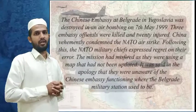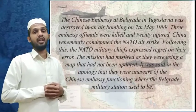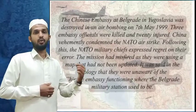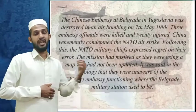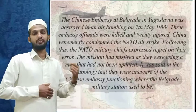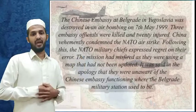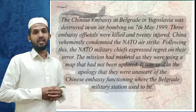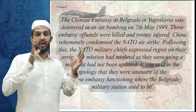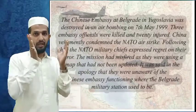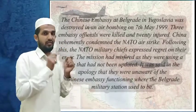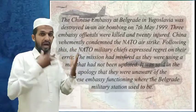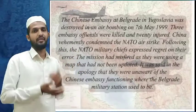First, we can see a story related to the map. The Chinese embassy at Belgrade in Yugoslavia was destroyed in an air bombing on 7th May 1999. Three embassy officers were killed and 20 injured. China condemned the NATO air strike, and the NATO military chief expressed regret. The mission misfired because they were using a map that had not been updated — they were unaware that the Chinese embassy was functioning where the Belgrade military station used to be.